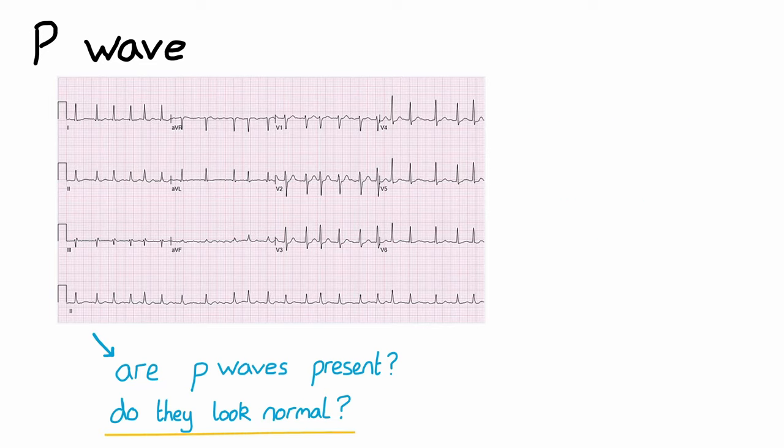This next ECG also has a prolonged PR interval, but this time each successive PR interval gets longer until eventually a QRS complex is dropped. In this case, every third QRS is missed. This is known as second-degree heart block, Mobitz type 1, sometimes referred to as Wenckebach phenomenon.